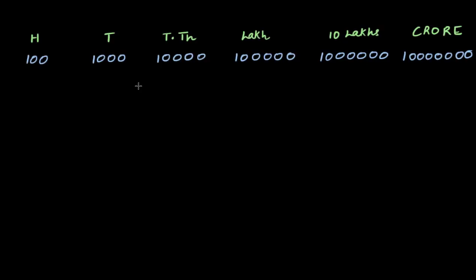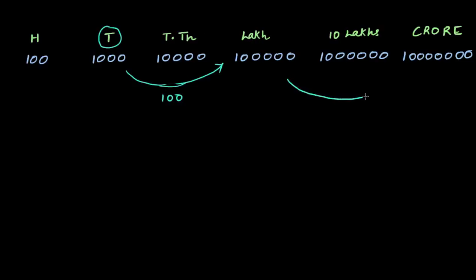And what's interesting here, if you notice, is that to go from a thousand to a lakh, you multiply by a hundred. So a hundred thousands is a lakh. And then you do the same thing to go from a lakh to a crore — a hundred lakhs makes a crore. So starting from thousands, a hundred times is a lakh, and a hundred times again is a crore.